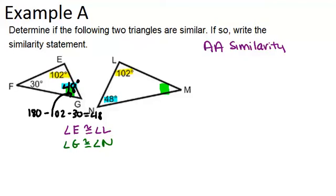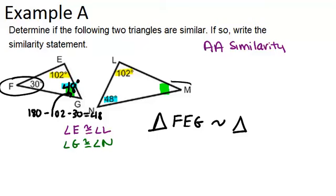We can write our similarity statement now. We have triangle FEG is similar to triangle, and let's see what matches up. Matching up with F must be angle M, matching up with E must be angle L, and matching up with G is N. So triangle FEG is similar to triangle MLN by angle-angle similarity.